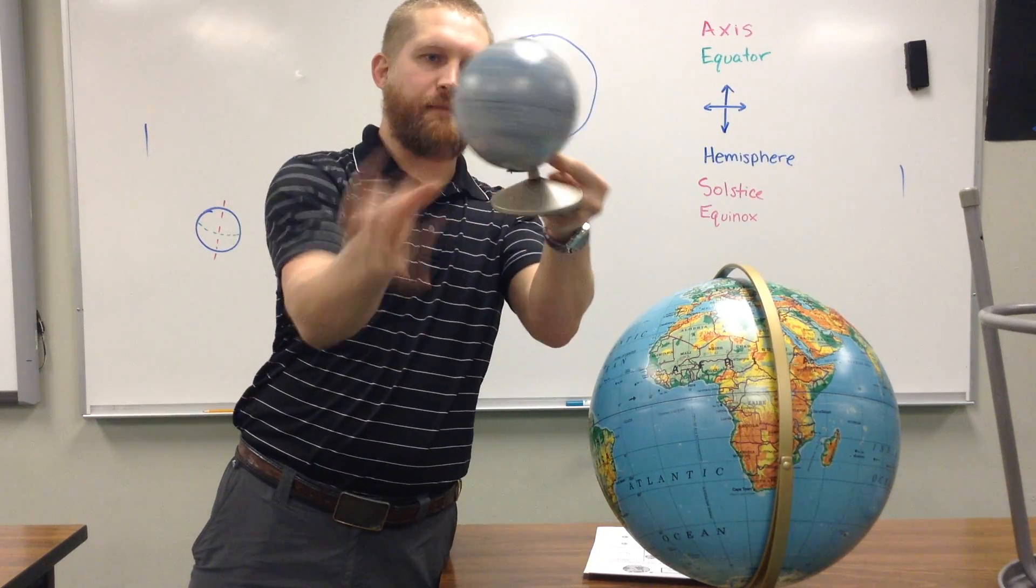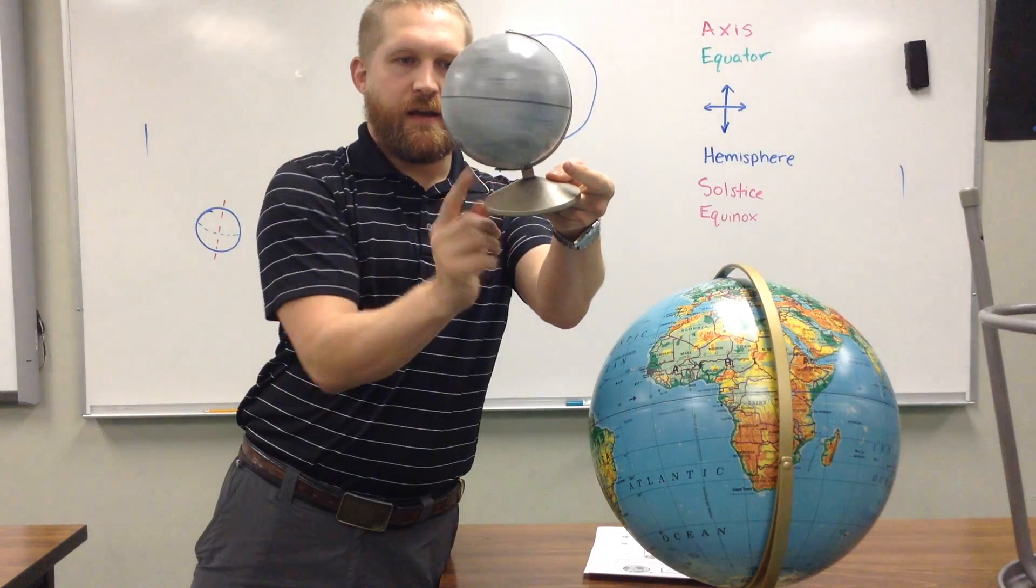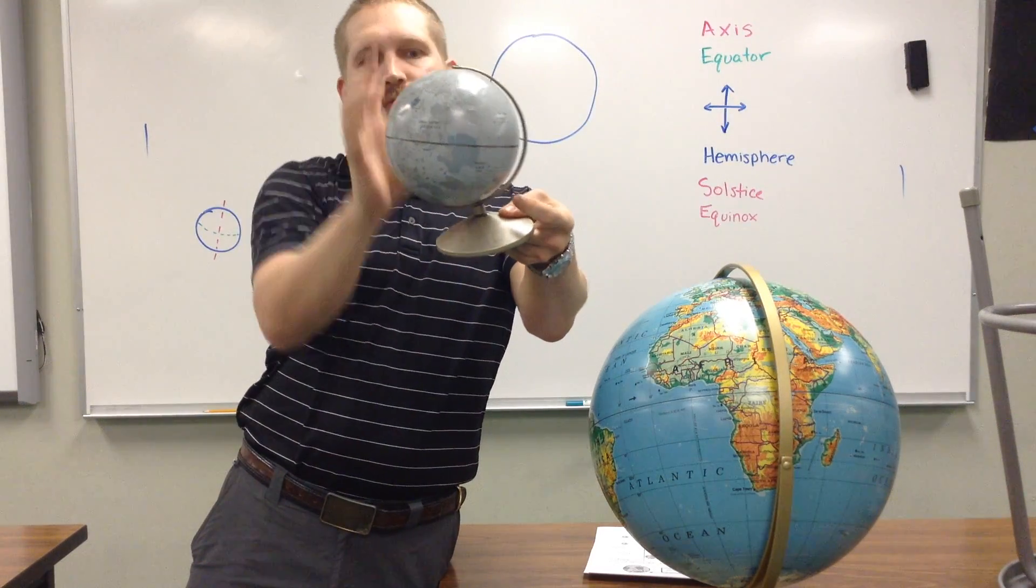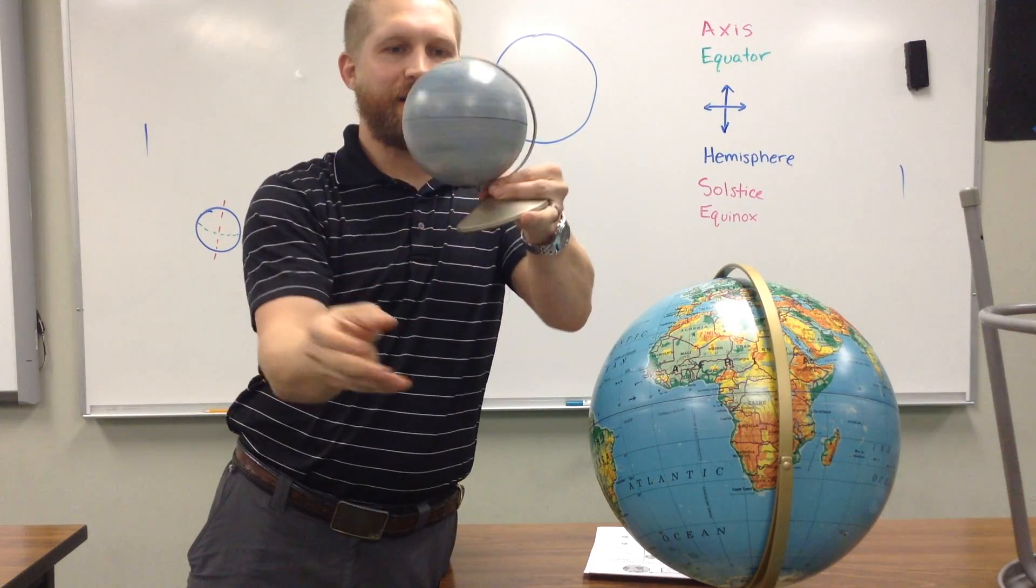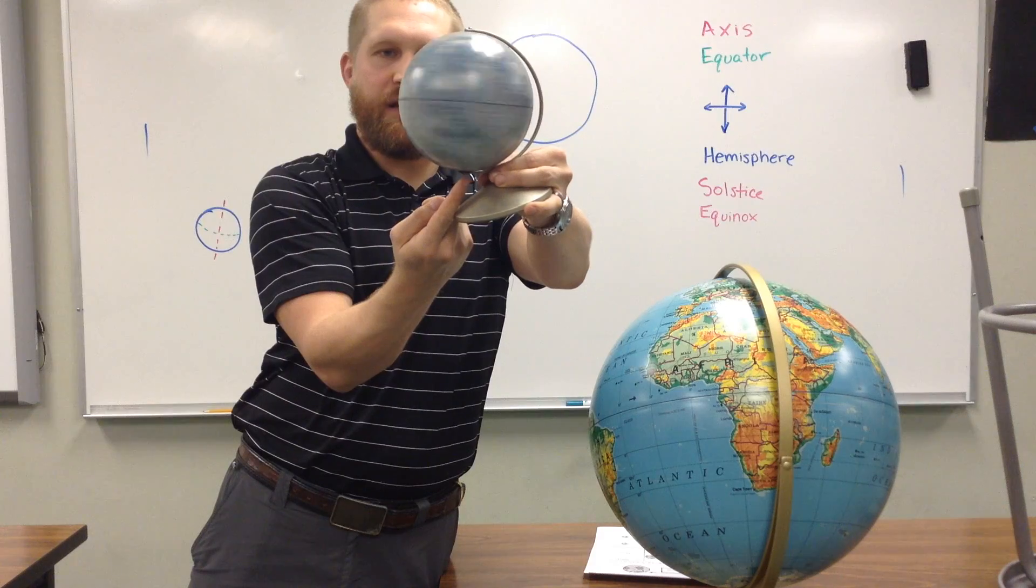All right, imagine if I was spinning a basketball on my finger, and I put my finger straight up through that basketball. That is the axis. So, an axis is something, a straight line that something spins on.